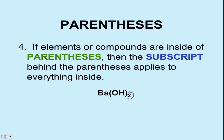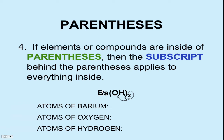With parentheses, we have to worry about subscripts. If there is a subscript behind a parenthesis, that number applies to everything on the inside, and we do multiplication. For example, in barium hydroxide Ba(OH)₂ — it's straightforward because we only have one atom of each inside: O and H. We take two times one for oxygen and two times one for hydrogen. Barium has a subscript of one and no coefficient, so barium equals one, but we get two atoms of oxygen and two atoms of hydrogen because of the subscript outside the parentheses.